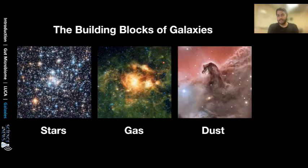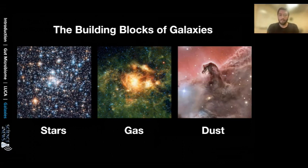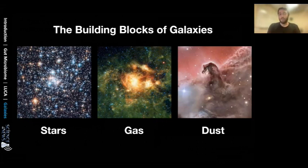Before discussing how a galaxy stops forming stars, I need to explain what galaxies are made of. Galaxies have roughly three main components. First, stars — galaxies contain on the order of billions of stars. Second, gas — stars are mostly made of gas, and gas within galaxies often emits its own light because it can be very hot. Third, dust — giant grains made up of tens of thousands of different atoms. Dust absorbs background light and appears as dark streaks on the sky.